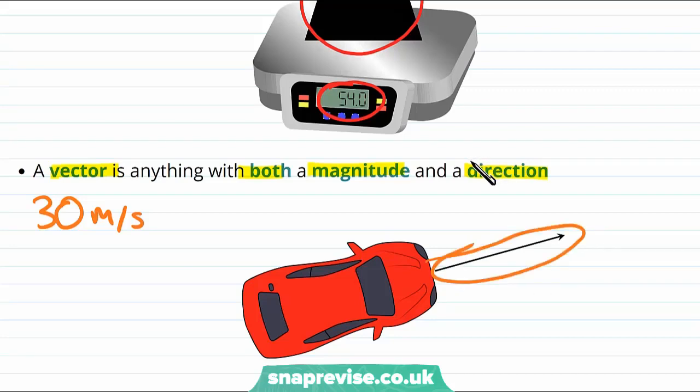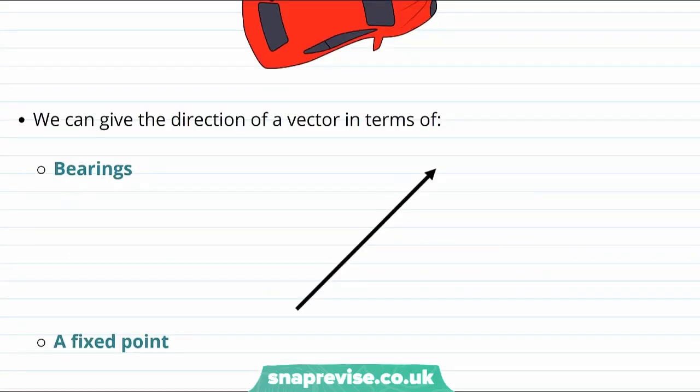So the direction of this arrow gives us the direction of the vector. And then the magnitude of a vector is given by a number. Now a convenient way to describe the direction of a vector is to give a bearing and a fixed point. We'll start with the fixed point, which just labels where the object currently is. And then to describe the direction, we just need to give an angle with respect to a vertical line. For example, the bearing of this vector would be this angle here.